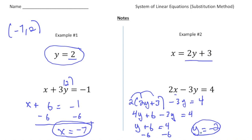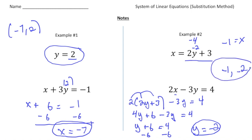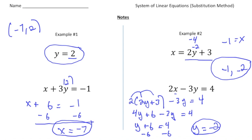Now to solve for x, I can take this negative 2 and plug it in. So 2 times negative 2 is negative 4, and negative 4 plus 3 gives us negative 1 for x. So the solution to this problem is x equals negative 1 and y equals negative 2. Let's try one that's a little more advanced.